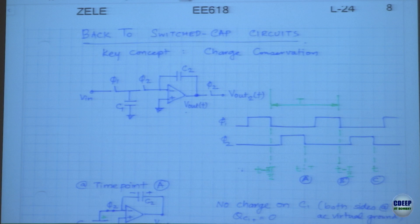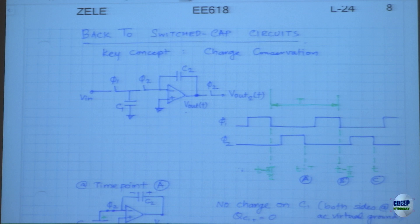If you don't have non-overlapping clocks, the signal gets messed up because you will not have a clue about what you sampled and what you're processing. We are sampling and then processing, sampling then processing. They cannot be continuous operations — you finish one, let go, then do the other. That's why we need non-overlapping clocks.